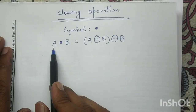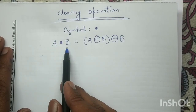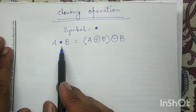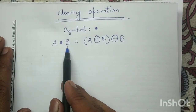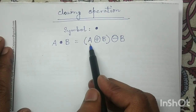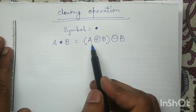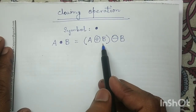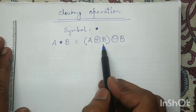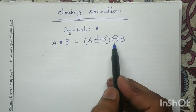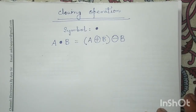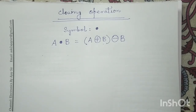Where A is the input image and B is the structuring element. So in order to perform A closing with B, first we have to compute the dilation operation, and in the dilated output we have to compute the erosion operation. Let us discuss how to perform this closing operation with an example.